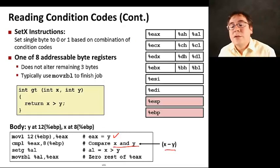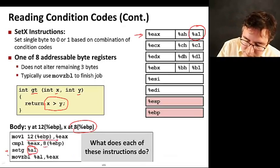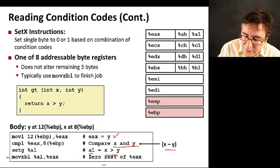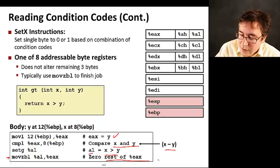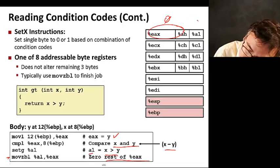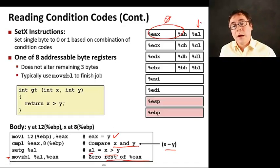Set greater gets the low-order byte of the EAX register, AL. Here we're reading y and putting it in EAX, comparing x and y, essentially doing a subtraction and setting the condition codes. Then AL is set to 1 if x is greater than y and set to 0 otherwise. The movzbl instruction zeros the rest of EAX. In the end, AL is set to 1 if x is greater than y, 0 otherwise.